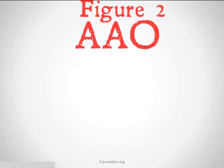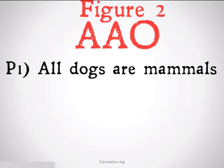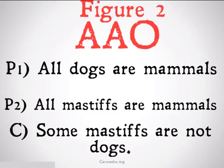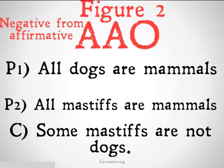Figure 2, AAO: all dogs are mammals; all mastiffs are mammals; therefore some mastiffs are not dogs. Once again, it should be clear this is going to be invalid because we are trying to draw a negative conclusion, O, from two affirmative premises, A and A. Negative from affirmative — going to be invalid.